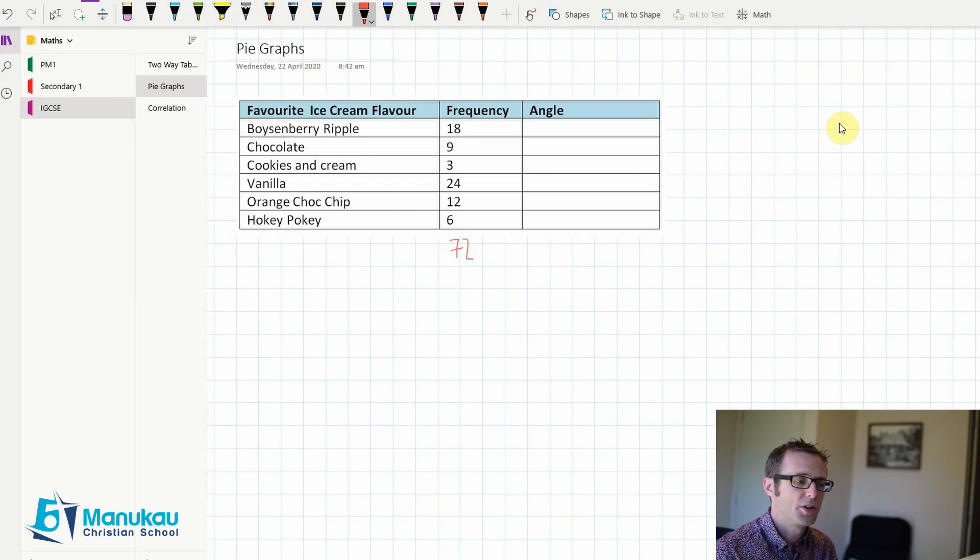And at this point, we want to find out what one person would equal. So I'm going to say, one person, how many degrees is that? And to find out that, we're going to go 360 divided by 72. So when I do that, 360 divided by 72, I'm getting 5.